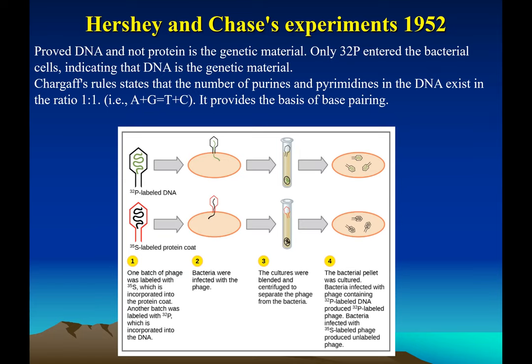Another huge discovery was made by Chargaff. When he measured the amount of bases, he always found that the combination of A's and G's was equal to T's and C's. This led to the base pairing rule: adenine pairs with thymine, and guanine pairs with cytosine, held together by hydrogen bonds.